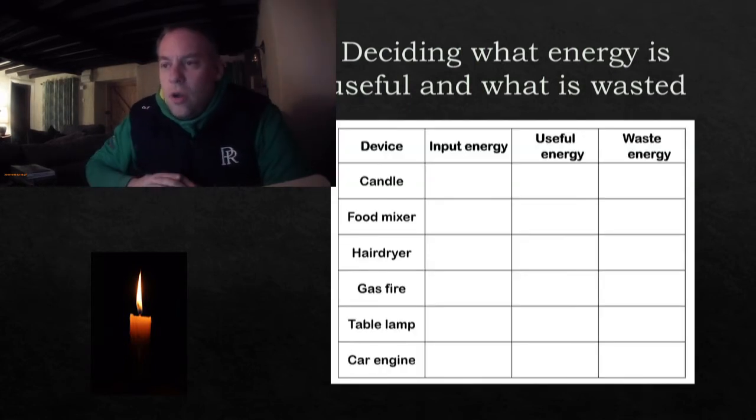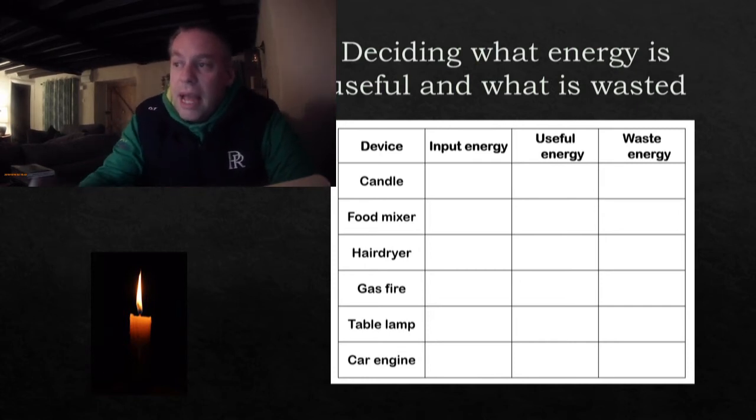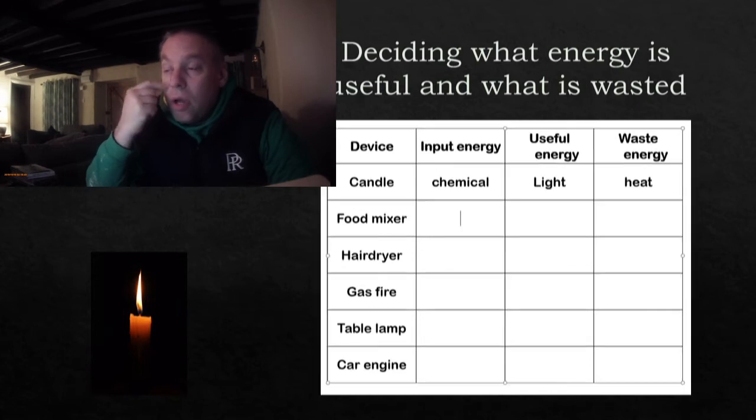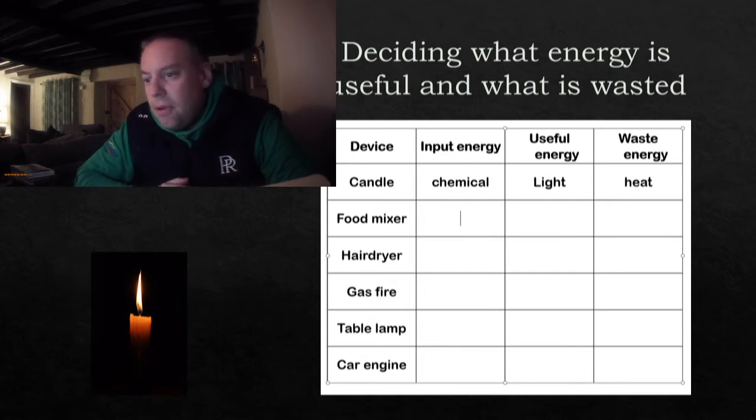Now just to check that you know exactly how to do that, I've put here a little sheet for you to fill out on the table. All you've got to do for this is to put in for each of the input energy, so for my candle the input energy would have been the chemical, and then decide a useful energy that comes out and a wasted energy. So for my candle example we had chemical going in, light was my useful energy and heat was my wasted energy. And so all you've got to do now is just fill in the input, useful and waste for each of those: food mixer, hair dryer, gas fire, table lamp and finally car engine.